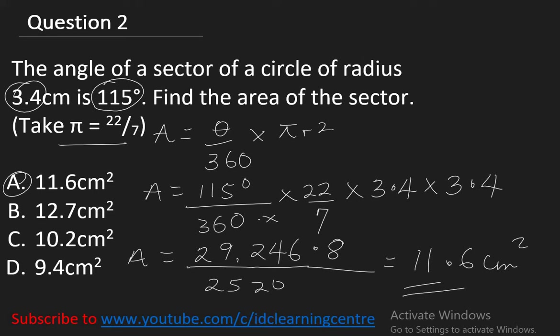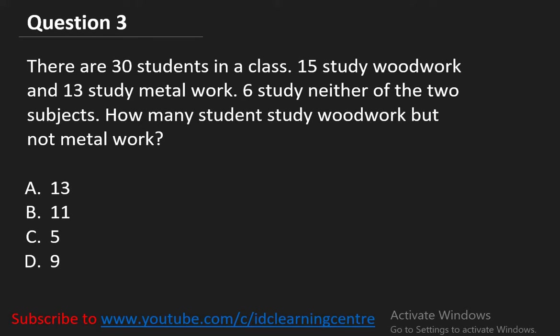Question number 3 says: There are 30 students in a class. 15 study woodwork and 13 study metalwork. 6 study neither of the two subjects. How many students study woodwork but not metalwork? Let's use a Venn diagram for this. The universal set equals 30 students in the class.